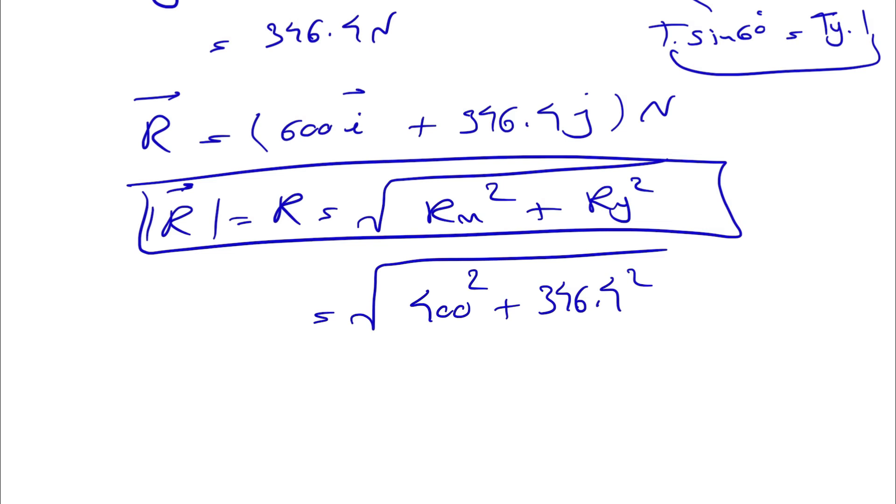the only difference is that we have the Rz component too, so if we want to do the resultant, we will have Rx squared plus Ry squared plus Rz squared, so same formula. And if we calculate, the final answer in here, we'll get 692.8 Newton, and that would be the final answer for this question.